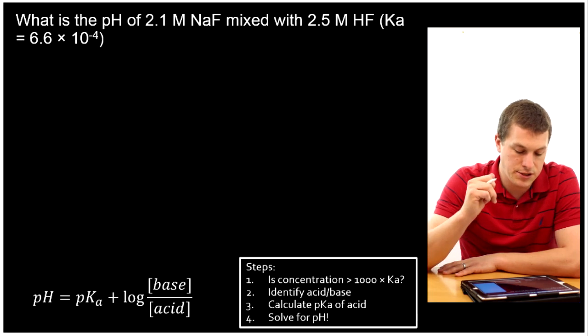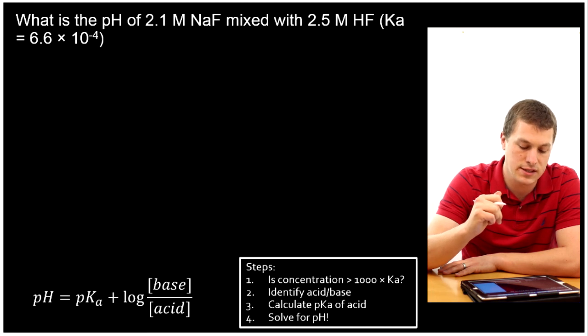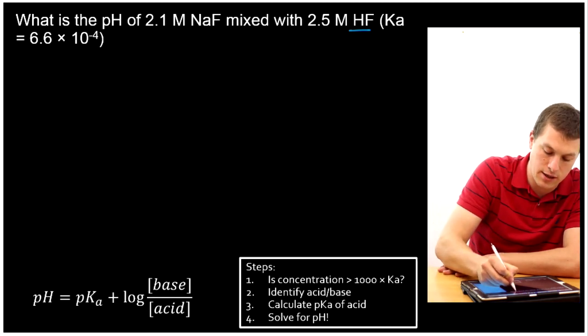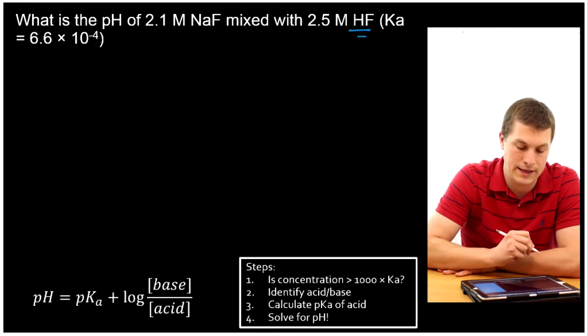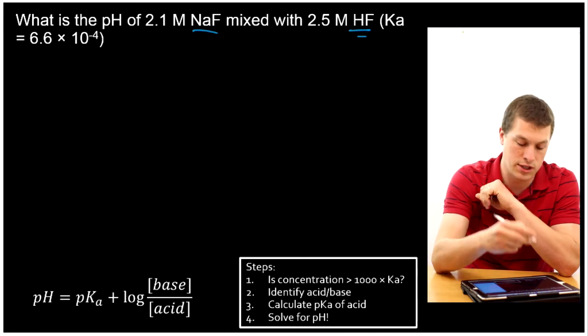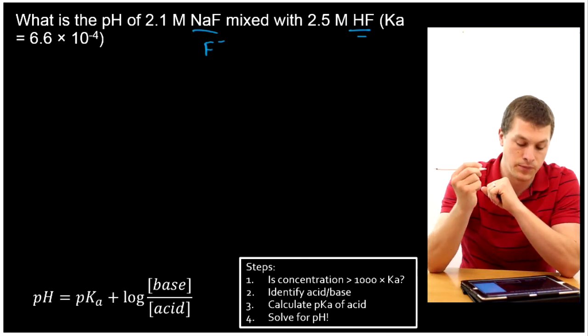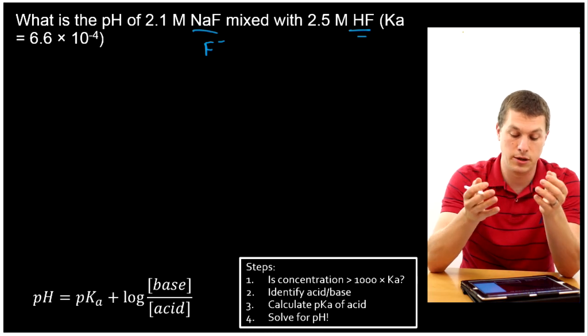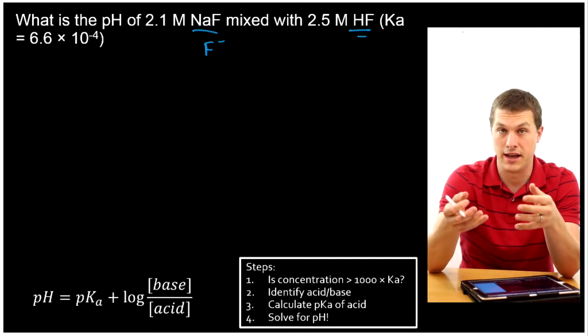This asks, what is the pH of 2.1 molar sodium fluoride mixed with 2.5 molar hydrofluoric acid? Notice this is a buffer because I have a weak acid. HF is one of your really important weak acids. And NaF is going to dissociate in solution and give me just F- and Na floating around separately. That means we're going to have an equilibrium between HF, a weak acid, and F-, its conjugate base. And that gives us a buffer.